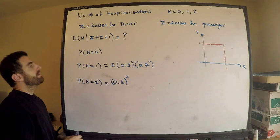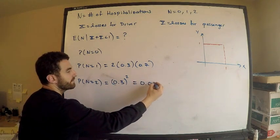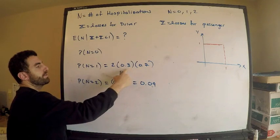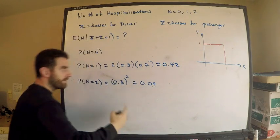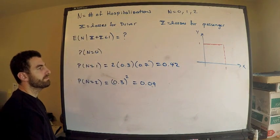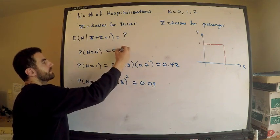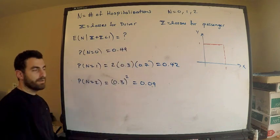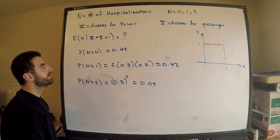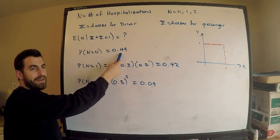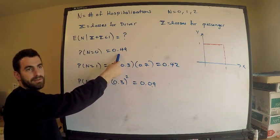Let's compute these real quick. Probability N equals two is 0.09. Probability N equals one is 0.21 times two, so 0.42. And probability N equals zero — 0.51 complement gives 0.49. And actually, if you think about it, this is just 0.7 squared, because both people don't get hospitalized, so that makes sense.